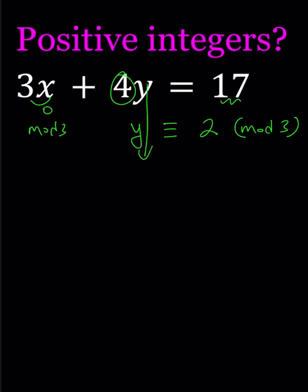Which means y can be 2. In that case, x needs to be 3. Or y can be 5. In that case, there's not going to be an x value. So the only pair that satisfies this is just going to be 3 comma 2.